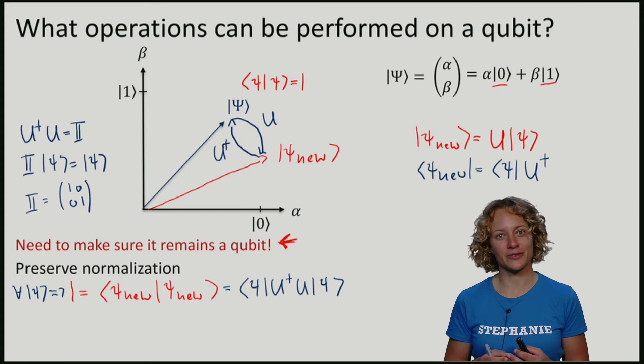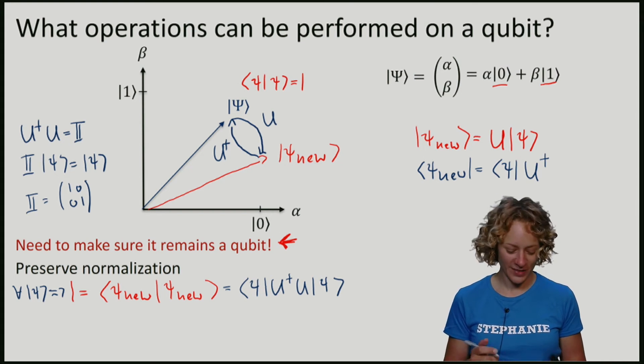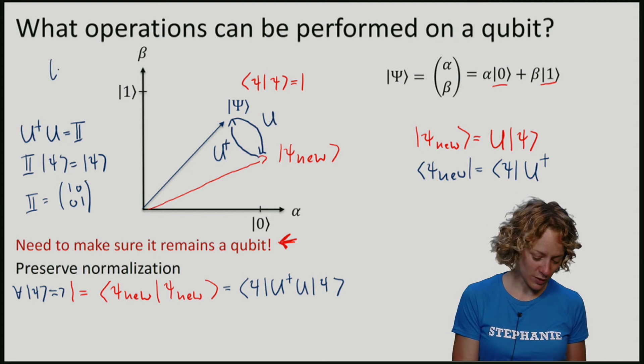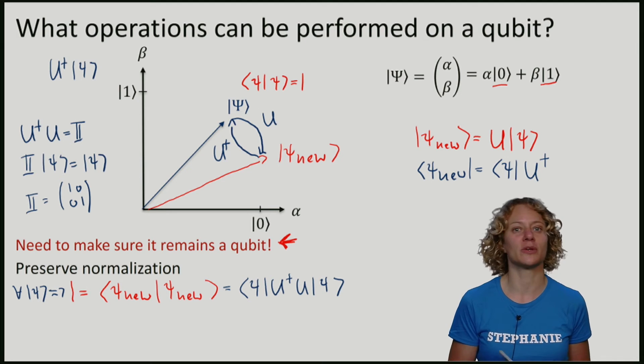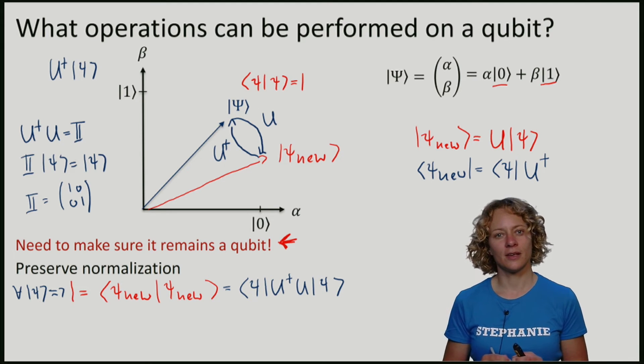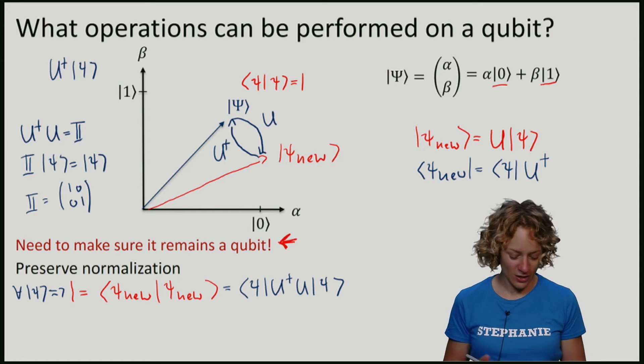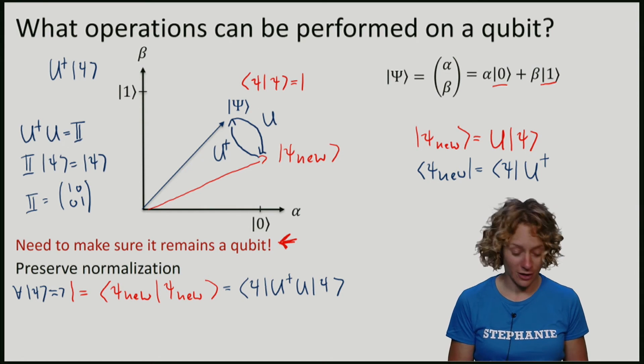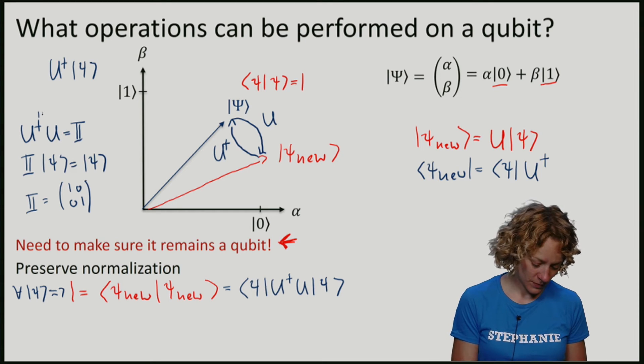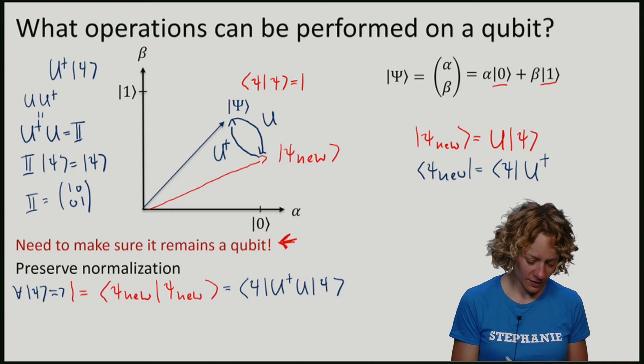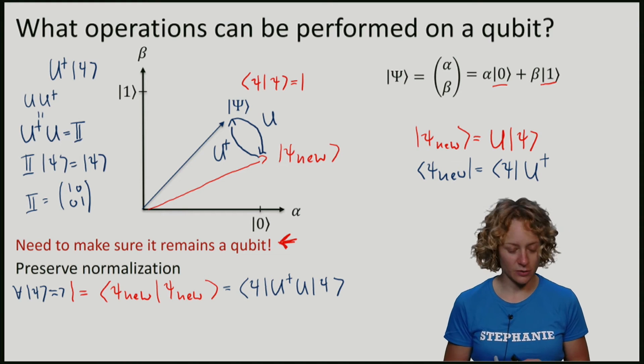Of course we could have done exactly the same calculation where we actually now also start applying this inverse operation. It's also an operation and would give us another qubit when I start with Psi. So this will give us a condition that looks almost the same, only U and U dagger are now interchanged. U U dagger should also be equal to the identity.